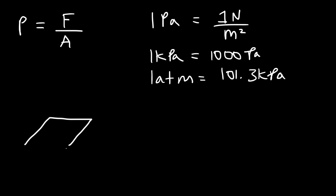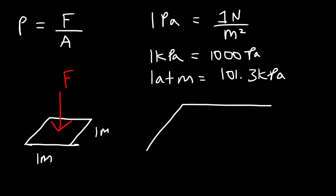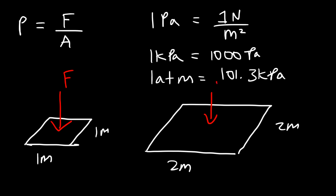Whenever you exert a force over a given area, that force exerts a pressure throughout that area. Pressure is simply force over area. Now, what happens if you increase the area but use the same force? If we doubled the dimensions and apply the same force over a larger area, the pressure is going to be a lot less.